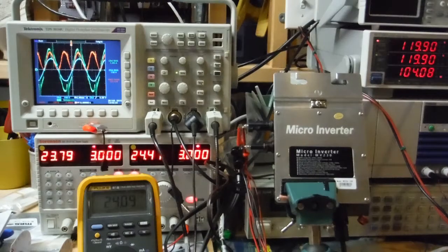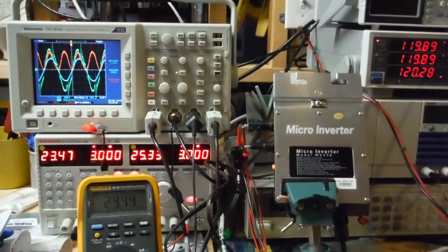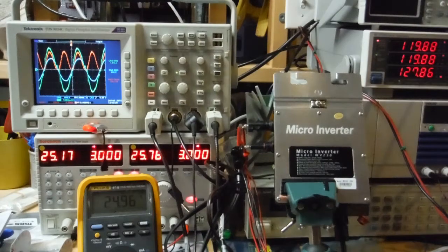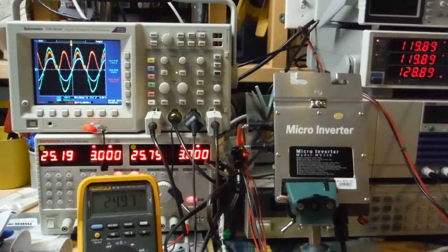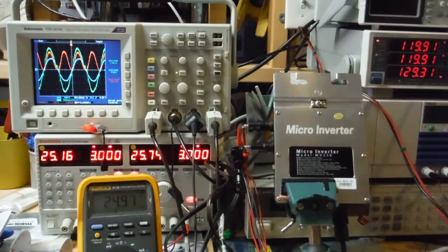I'm at 3 amps on both supplies now. And the power over here on this meter should climb back up close to 130. So the anti-islanding protection seems to work.